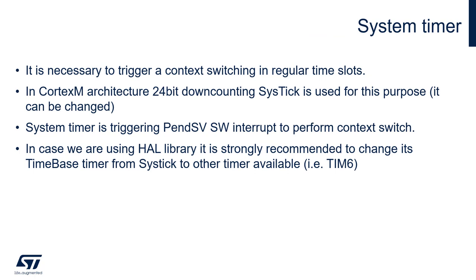The system timer is needed to trigger context switching at regular time slots. In Cortex-M architecture, the 24-bit down-counting SysTick timer is used for this purpose, though it can be changed — for example, in low-power applications. The system timer triggers PendSV to perform a context switch. If using the HAL library, it is strongly recommended to change the HAL time-base timer — which generates timeouts and delays — from SysTick to another timer such as Timer 6, to avoid improper timing management.